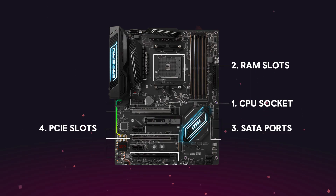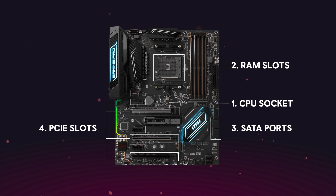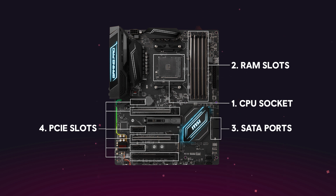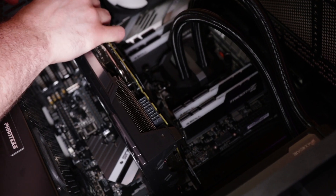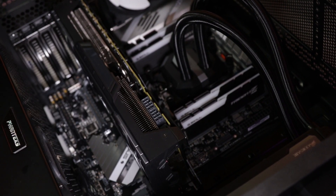Next we have PCIe slots. There are usually a few of them on the motherboard, and they're designated with X16, X8, X4, and X1. The difference between the X16 slot and the lower X8, X4, and X1 slots is the maximum bandwidth that can flow through them. Generally, you'll want to reserve the X16 or X8 slots for PCIe drives or graphics cards, since they are more demanding.